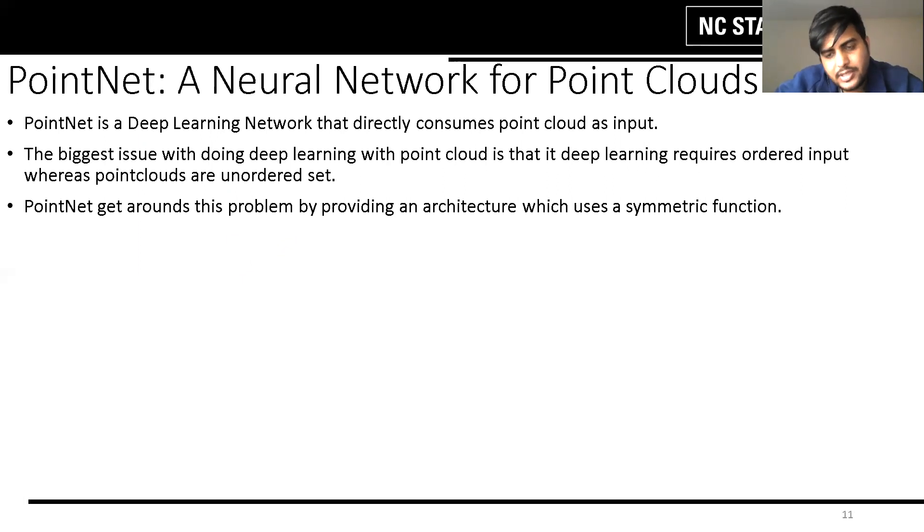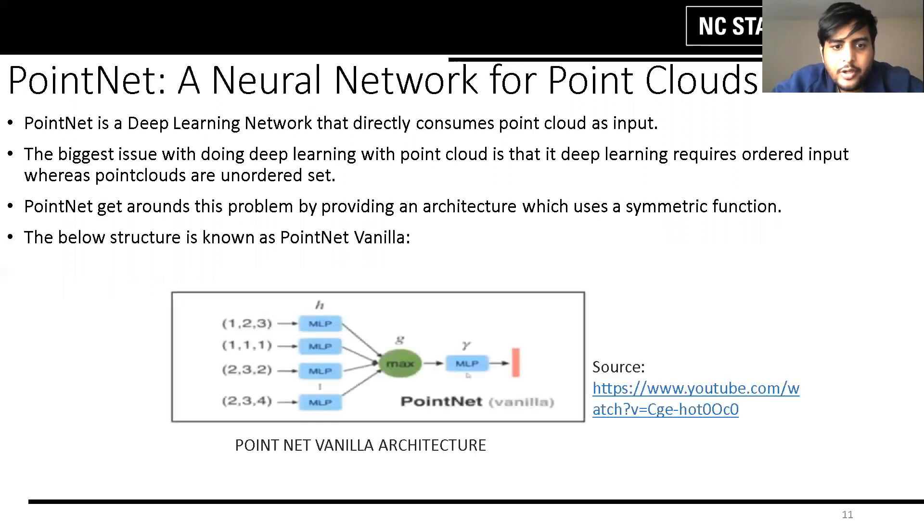PointNet gets around this problem by using symmetric functions as part of its architecture. By using symmetric functions, since symmetric functions are invariant to the order of the input, it performs really well on an unordered data set. For example, this structure is the vanilla structure of PointNet and here you can see that every point is consumed by a single multi-layered perceptron and then we do the max pooling.